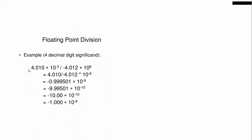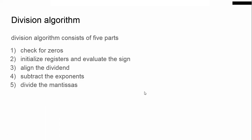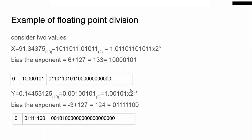Then initialize registers and evaluate the sign. Initialize registers means you put the X value in one register and Y in another. Here one is negative and one is positive, so we do XOR. When both signs are the same, we get 0; when the signs are different, we get 1. So when both signs are different, the result will be negative.